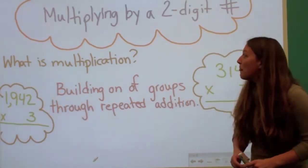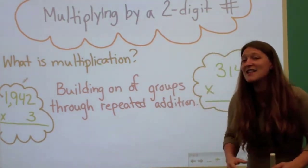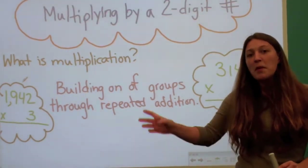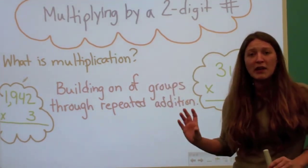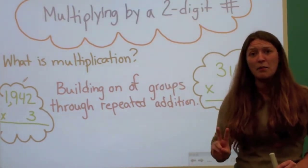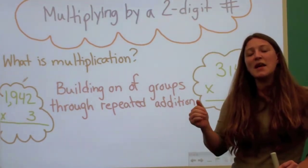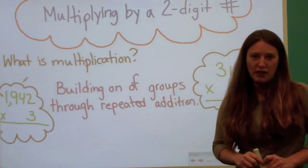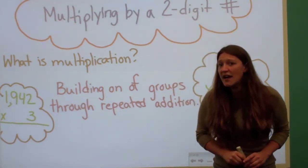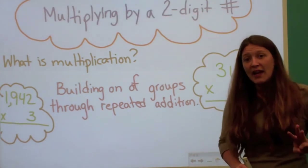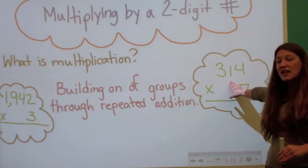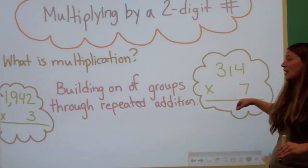Just a refresher — what is multiplication? Multiplication is the building on of a group of numbers through repeated addition. The multiplicand is the first number in a multiplication problem — it's the number that repeats itself. The multiplier, the second number, is the amount of times that we multiply by the multiplicand. For example, 1,942 is the multiplicand and 3 is the multiplier; and 314 is the multiplicand and 7 is the multiplier.